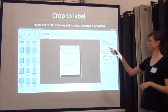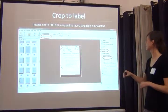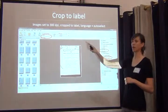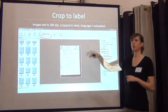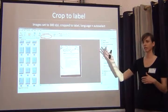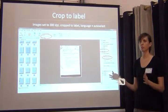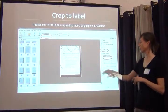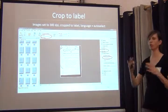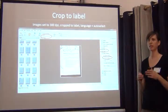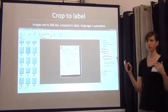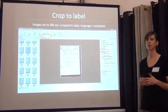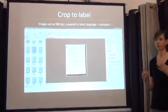You can also ask ABBYY to crop your labels for you, set certain resolutions, and set languages. If all your labels are going to be in French, you can tell it up front so it outputs matching that. Or we usually tell it to auto-select the text language, because for certain projects — we've been doing a lot for Caribbean projects — those labels could be in Spanish, French, or English.